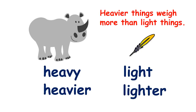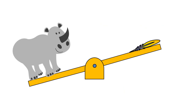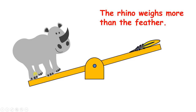Heavier things weigh more than lighter things. So if you put a rhino and a feather on a balance, it would slope down towards the rhino's side because the rhino weighs more than the feather.